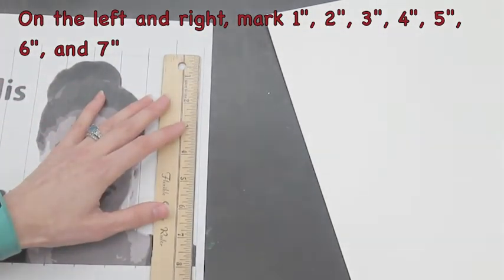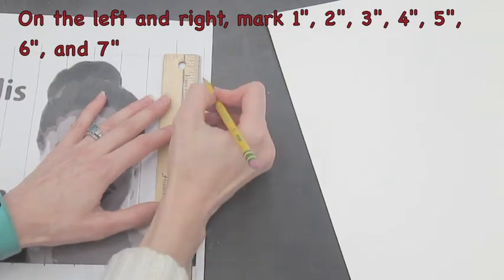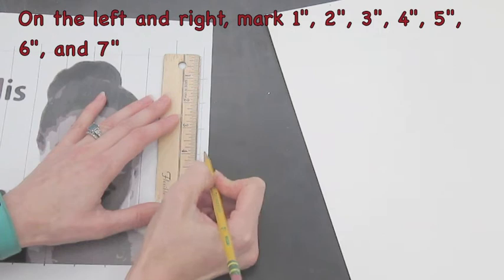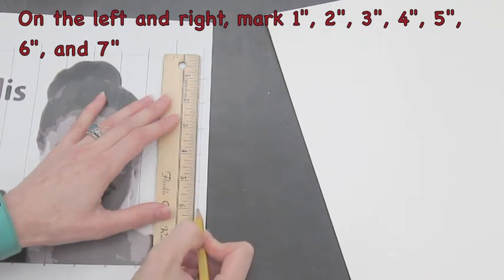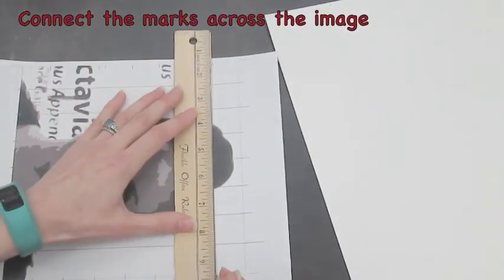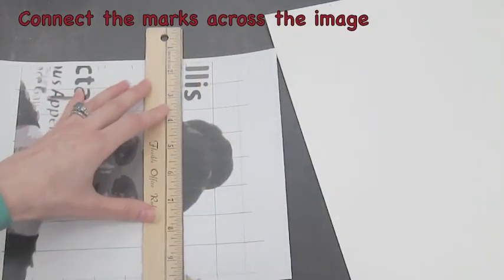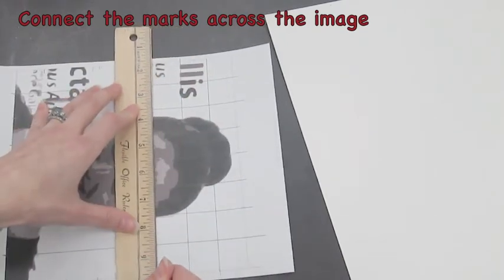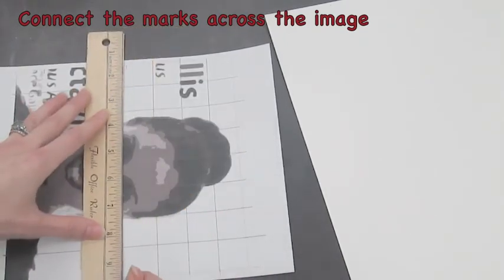And do the same on the right hand side. So make sure 0 is at the top and mark at 1, 2, 3, 4, 5, 6, and 7. Now I can turn my paper or my ruler and connect those marks across the image, once again drawing dark when I draw across dark areas to make sure that I can see my line.